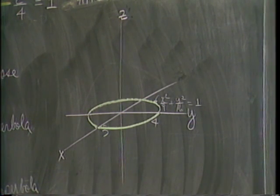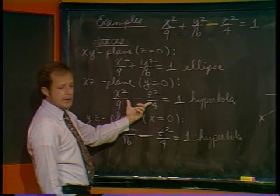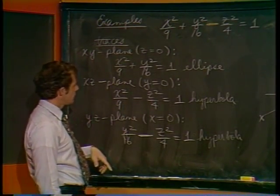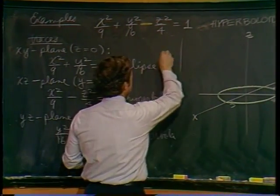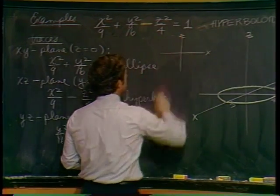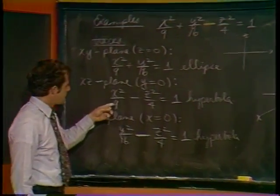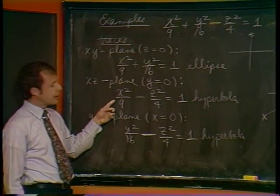Something like that. So there's your x squared over 9 plus y squared over 16 equals 1 - that's the trace in the xy-plane. That was the same.